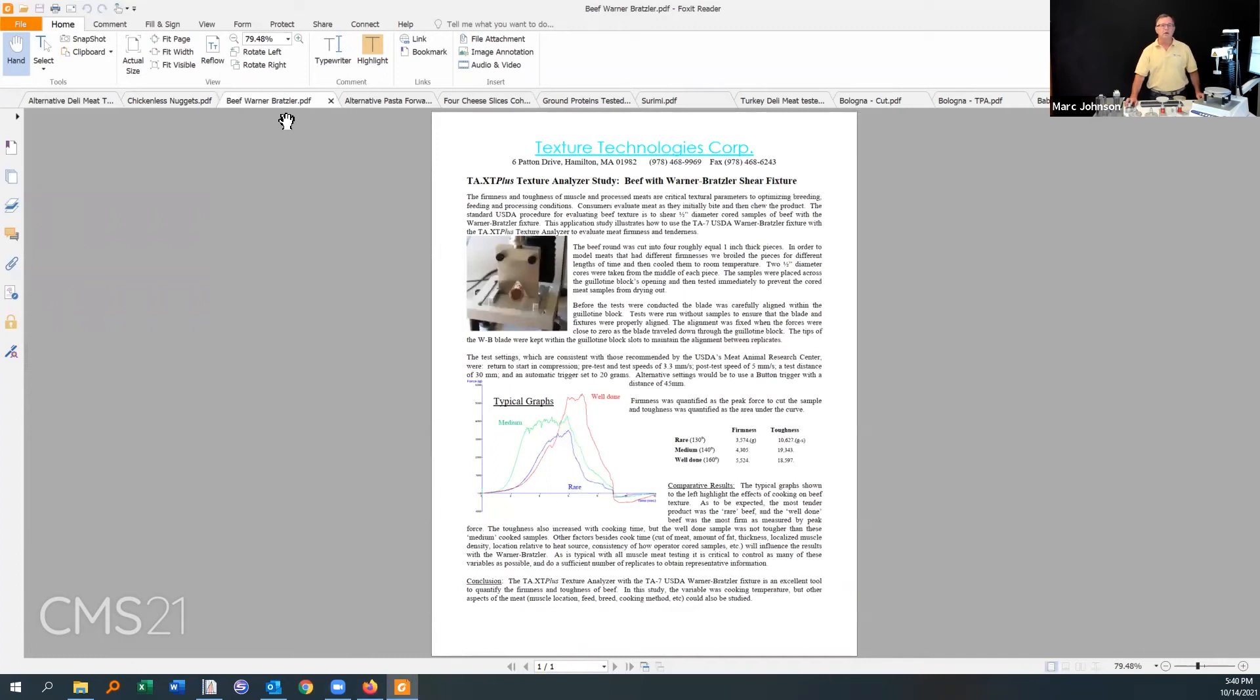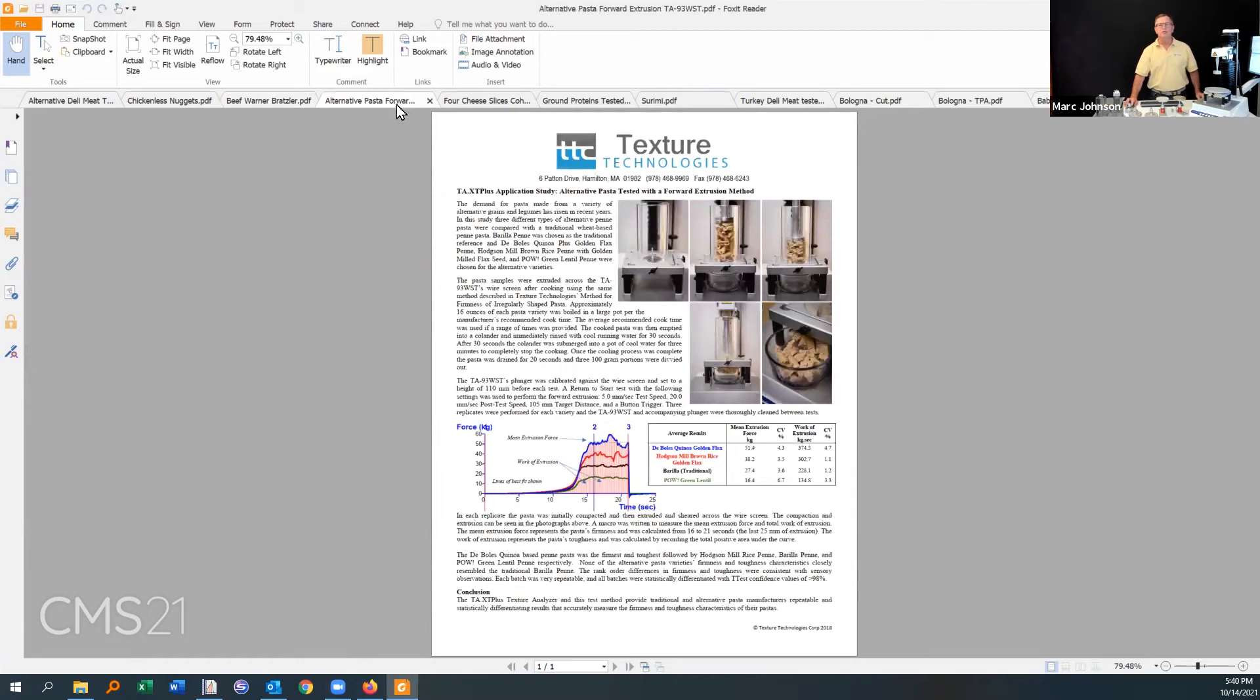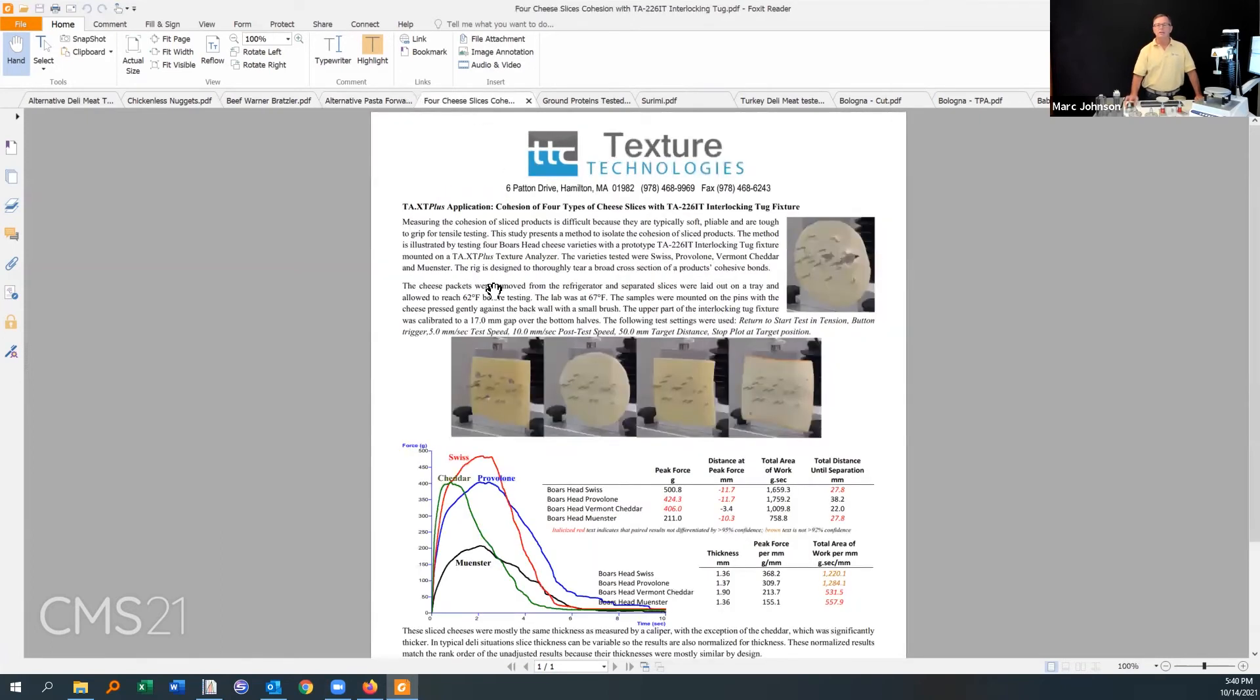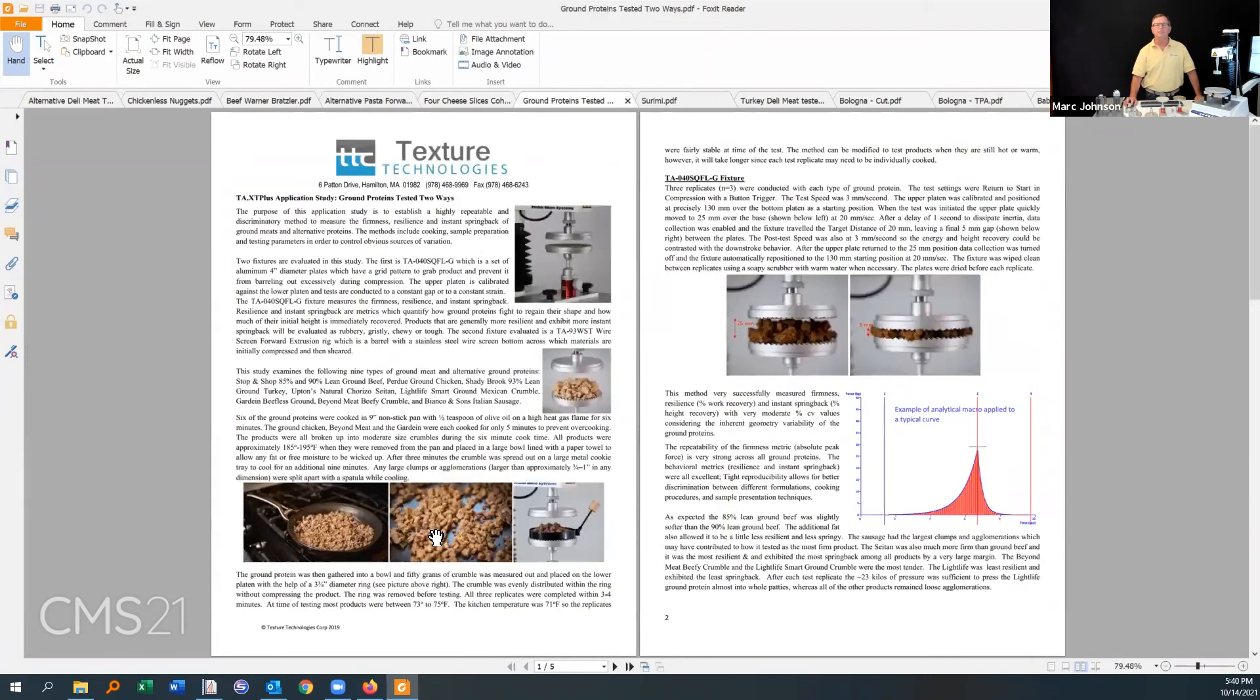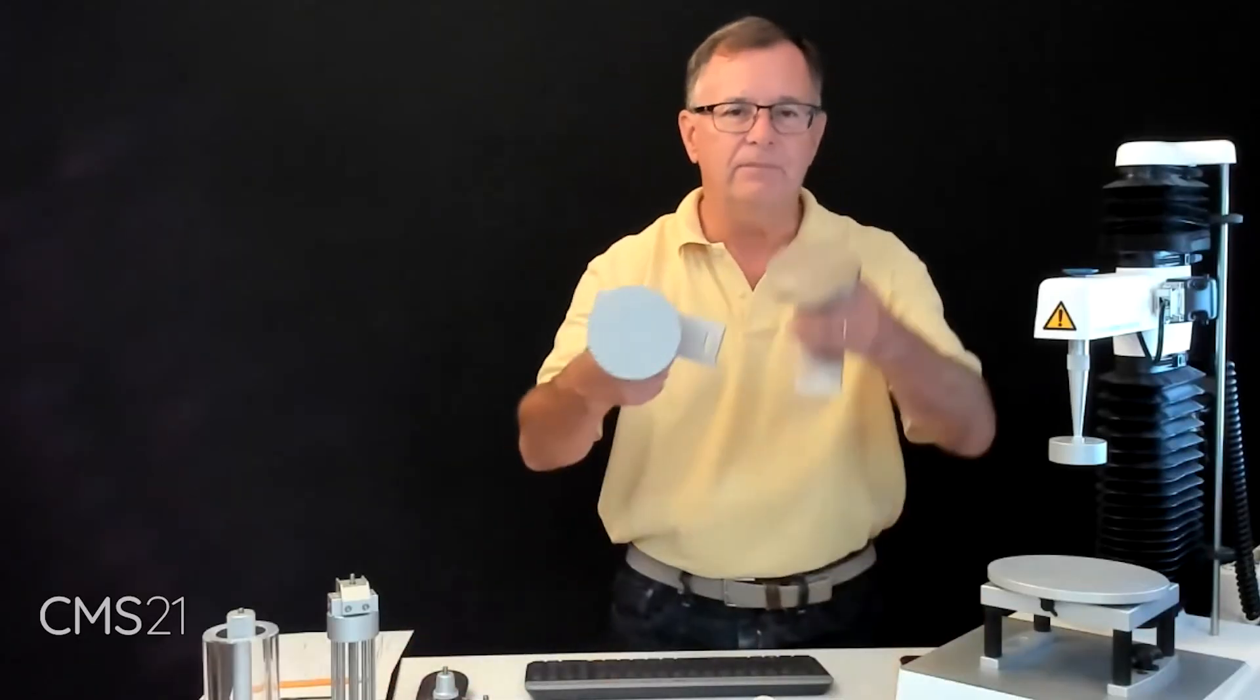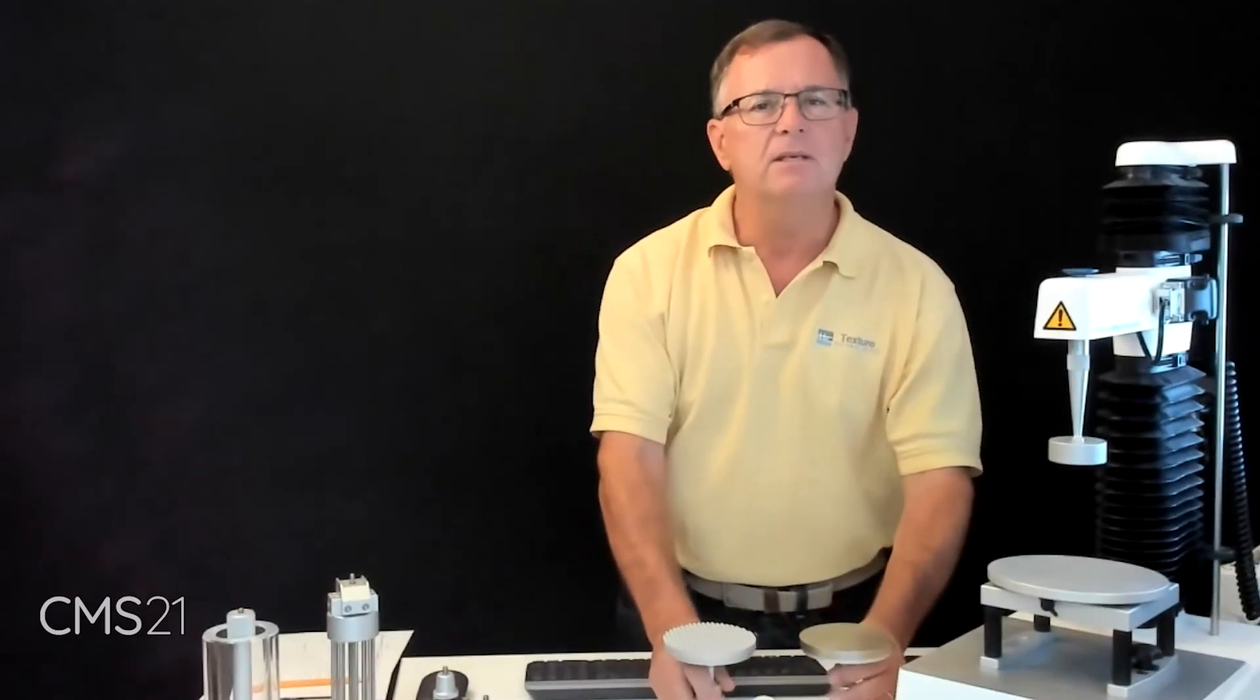In this case we're looking at different types of deli meats. In this case we're looking at chickenless nuggets. Here we're looking at doing a Warner-Bratzler test on standard meats. This is extruding forward, extruding across some wire of some turkey-like materials. These are pulling apart deli meats on interlocking tug basis, really a tug of war on deli meat. It's kind of fun to do in the lab. This is some parallel testing of ground materials with different types of fixtures that we have here.